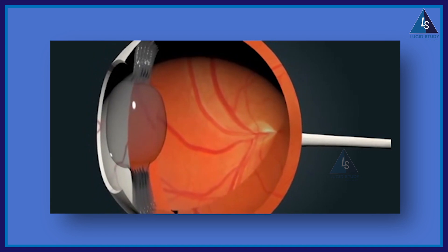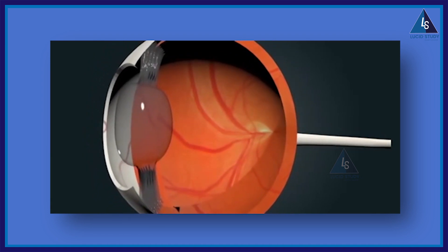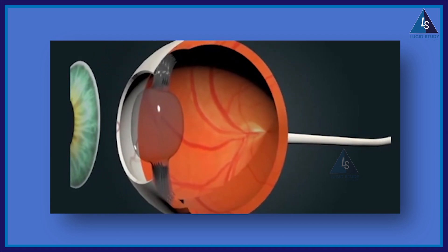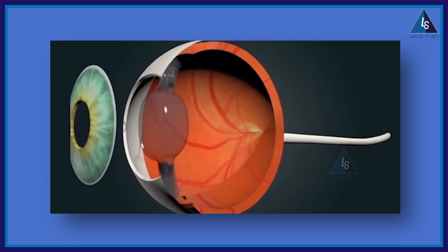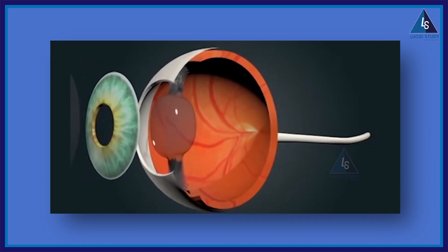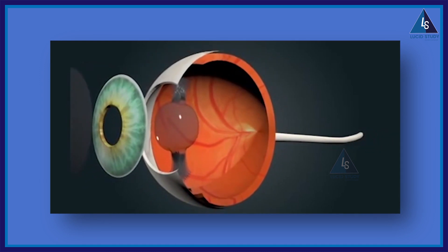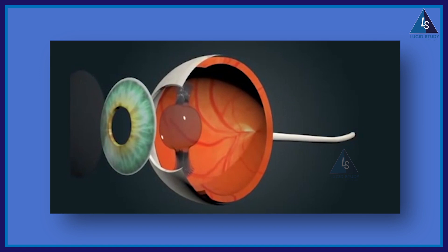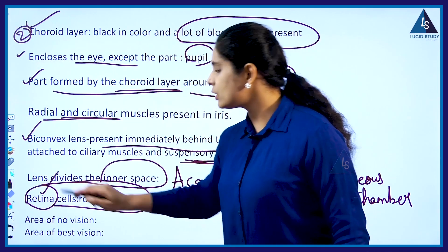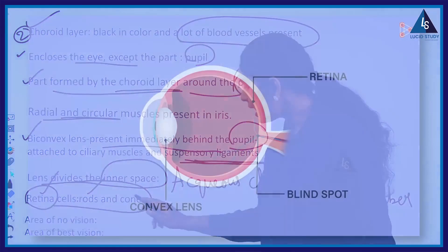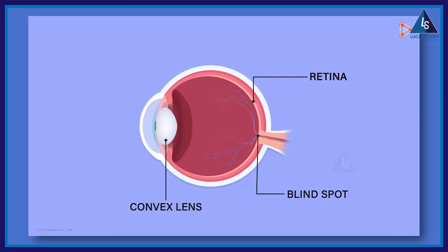The two chambers are the aqueous chamber and the vitreous chamber. The aqueous chamber consists of a fluid, whereas the vitreous chamber consists of a jelly-like substance.